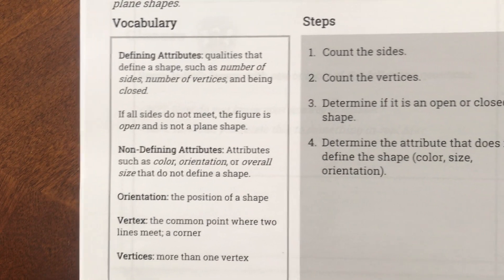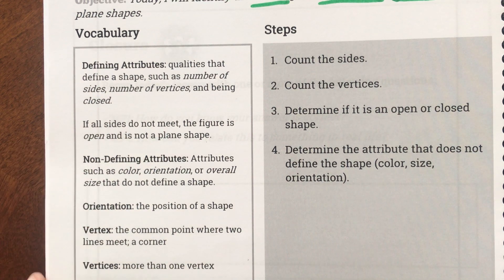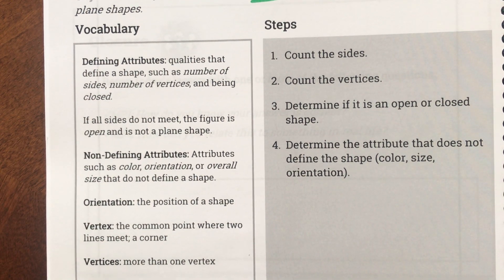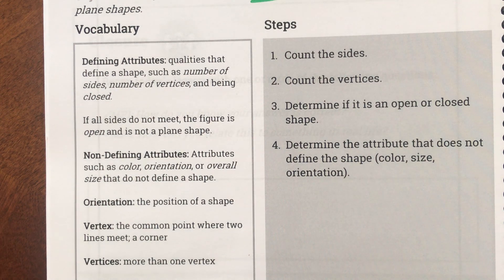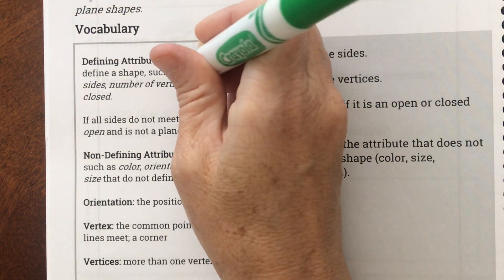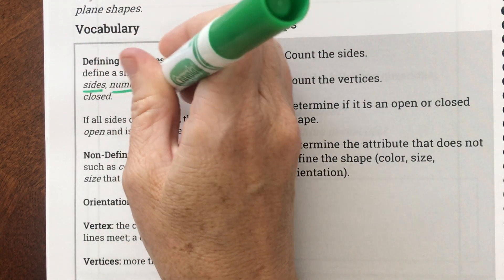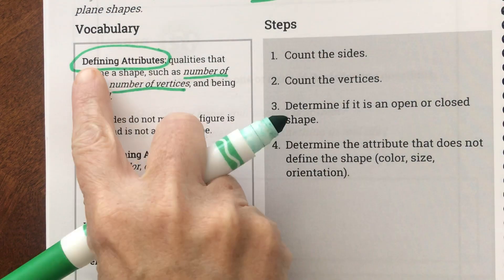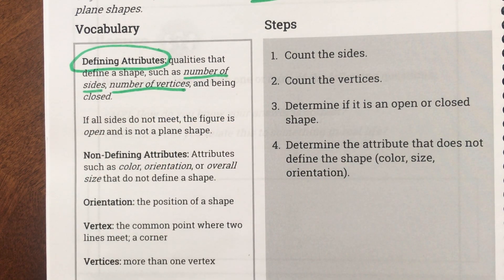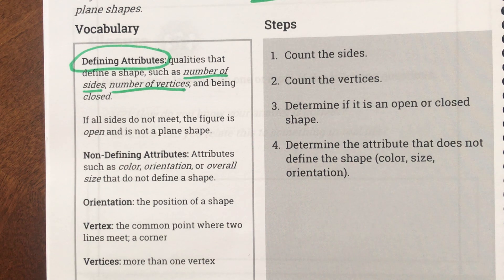Let's look at our vocabulary section. The first word says 'defining attributes' — it says qualities that define a shape. Define means give a definition to a shape, or let you know what that shape is. Some defining attributes are the number of sides and the number of vertices. Those are our defining attributes, so let's underline those words and circle them.